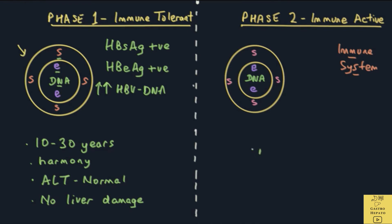The ALT levels are high, indicating liver cell damage. This phase can last for a few months to a few years. It is at this stage of the disease where maximum liver cell damage is taking place.